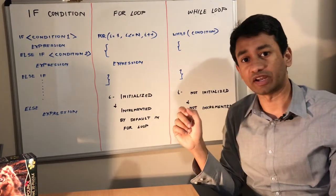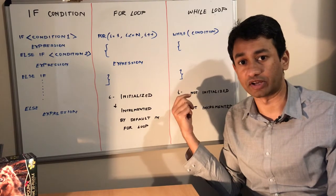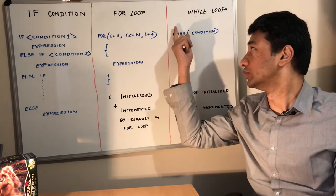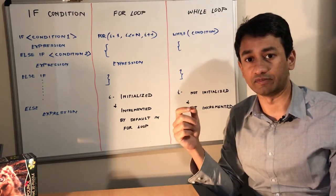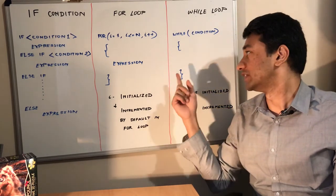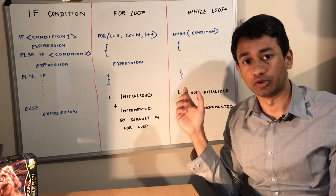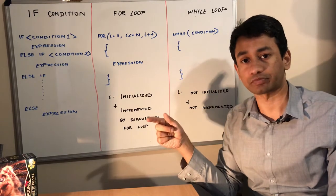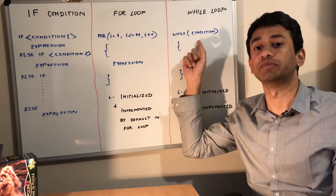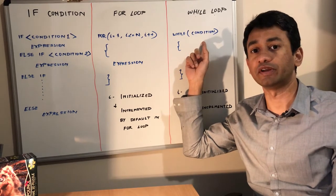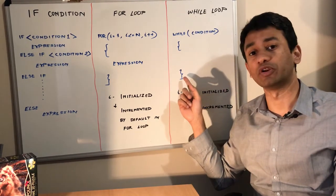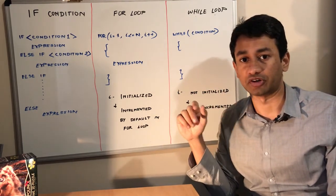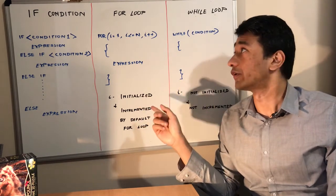In a while loop, we don't have an i value that is initialized or incremented by default. If we are going to use a variable like i which needs to be incremented, we need to explicitly increment those values inside the while loop. By default, the while loop executes and loops through until a particular condition is satisfied. When the condition fails, it stops executing the while loop and gets out to execute the immediate next statement. So that's a brief introduction about if-then-else, for loop, and while loop.